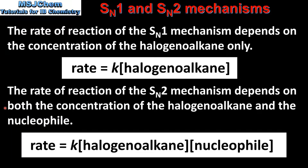For the SN2 mechanism the rate of reaction depends on both the concentration of the halogenoalkane and the nucleophile. The 2 in SN2 stands for bimolecular. Here we have an example rate expression showing that the rate of reaction depends on both the concentration of the halogenoalkane and the nucleophile. The orders of reaction are first order with respect to both the halogenoalkane and the nucleophile.